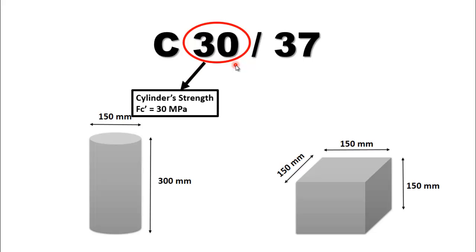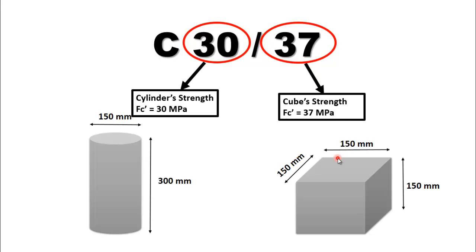and 37 represents a cube crushing strength of 37 megapascals. It is the same concrete, but its cylindrical crushing strength is 30 megapascals and its cube crushing strength is 37 megapascals. Similarly, C50/60 concrete means concrete having a cylinder strength of 50 megapascals and a cube strength of 60 megapascals.